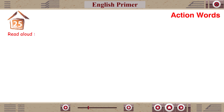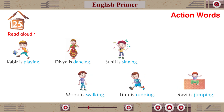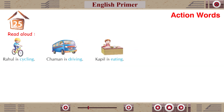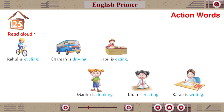Read aloud: Kabir is playing. Divya is dancing. Sunil is singing. Monu is walking. Tinu is running. Ravi is jumping. Rahul is cycling. Chaman is driving. Kapil is eating. Madhu is drinking. Kiran is reading. Karan is writing.